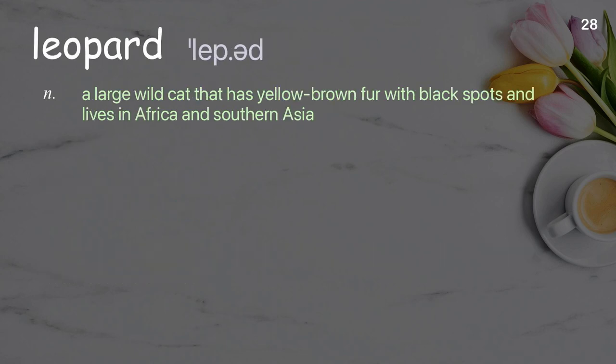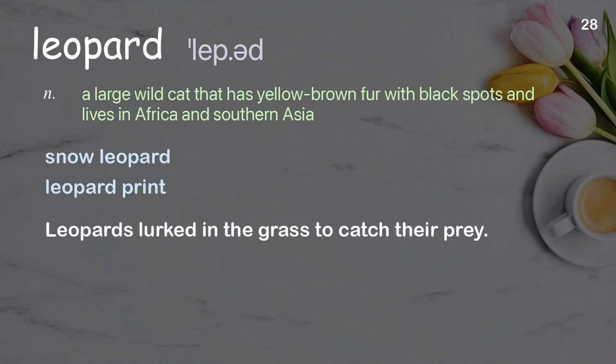Leopard: a large wildcat that has yellow-brown fur with black spots and lives in Africa and southern Asia. Examples: snow leopard, leopard print. Leopards lurked in the grass to catch their prey.